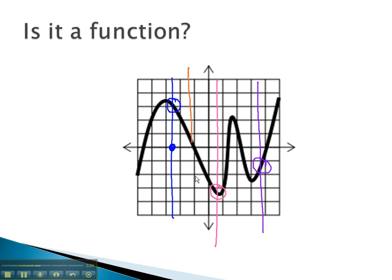If the vertical line only crosses the graph once, we can say that, yes, this is the graph of a function. Each input has only one output.